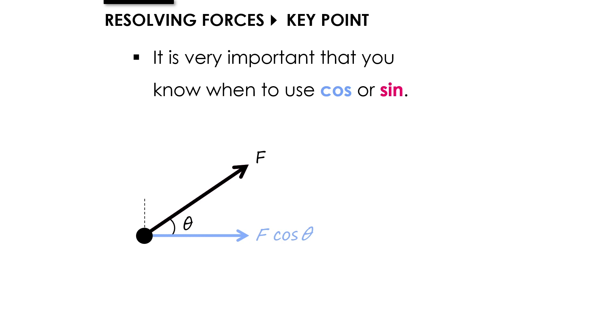So the rule that will allow you to simplify all of these calculations is: if you cross the angle, you use cos. If we don't cross the angle and we go in the other direction, that will be F sine theta. If you can remember that, you've got a really good chance of being able to deal with all the different kinds of problems covered in this unit.